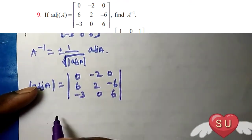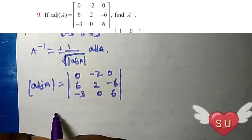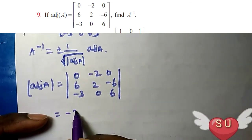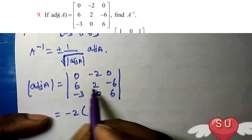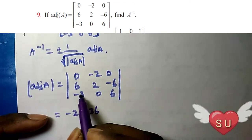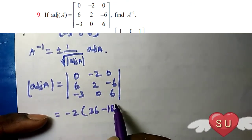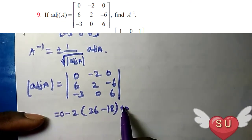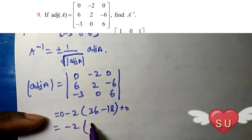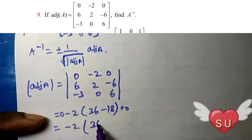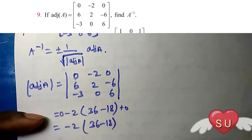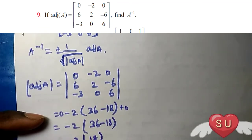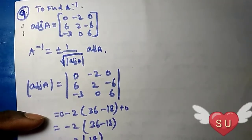Okay, now next I am going to determine. 0, so, minus 2, minus 2, minus 2, 6, 6, 37, 36, minus 18, plus 0. So, minus 2, minus 2, minus 18. So, 0, minus 2, 36, minus 18, 18. So, 36.